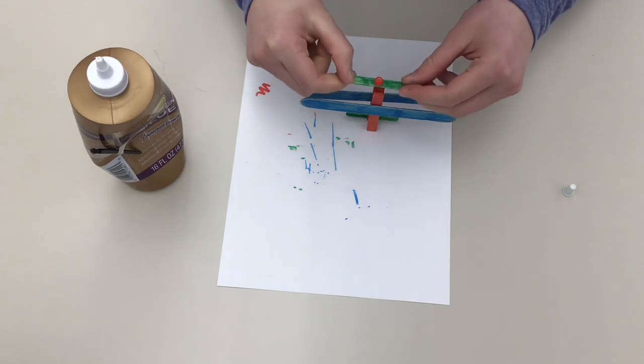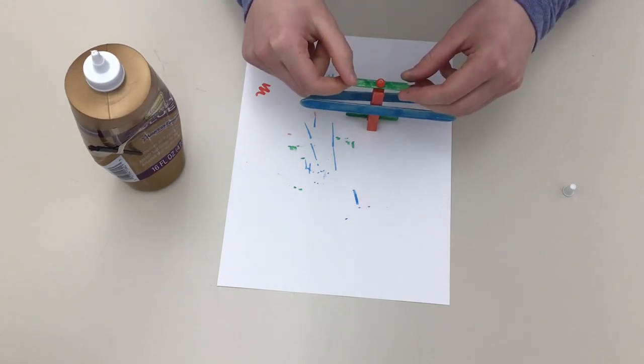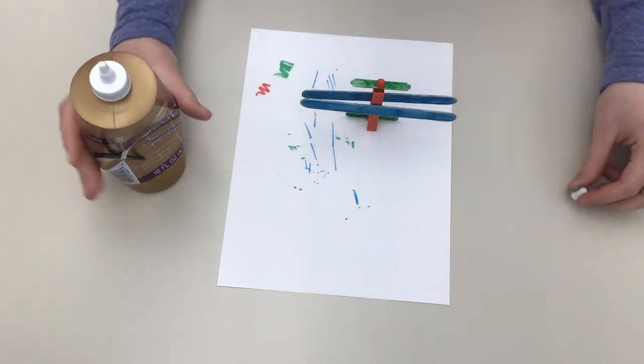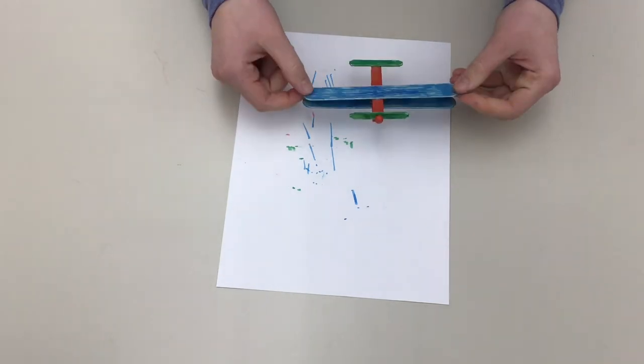And then balance your propeller on the middle right there. And then this is going to take a while to dry too. Once it's all dry, your clothespin airplane is done.